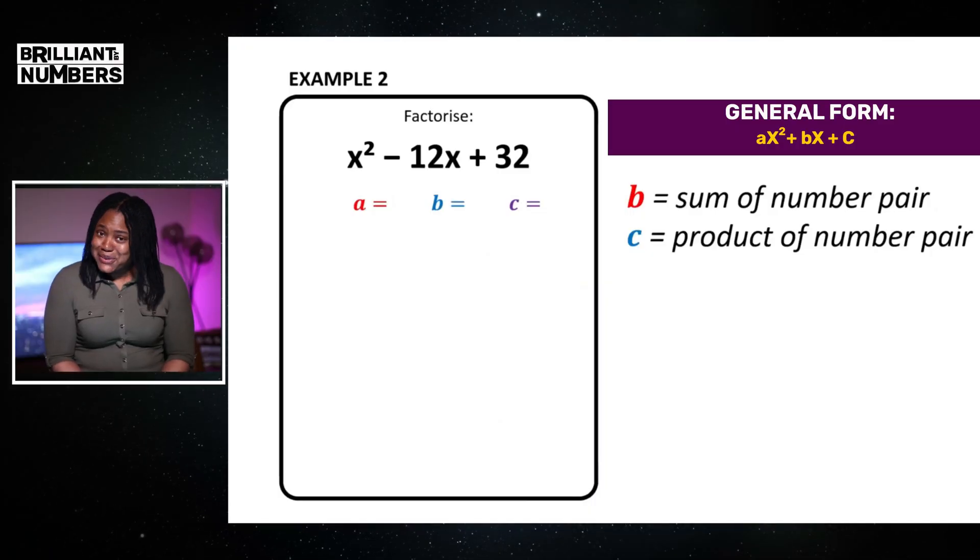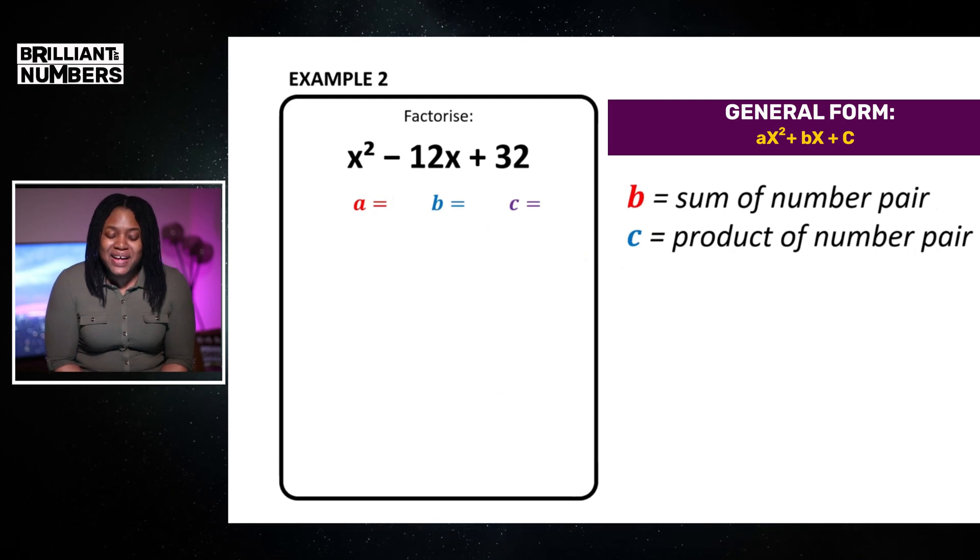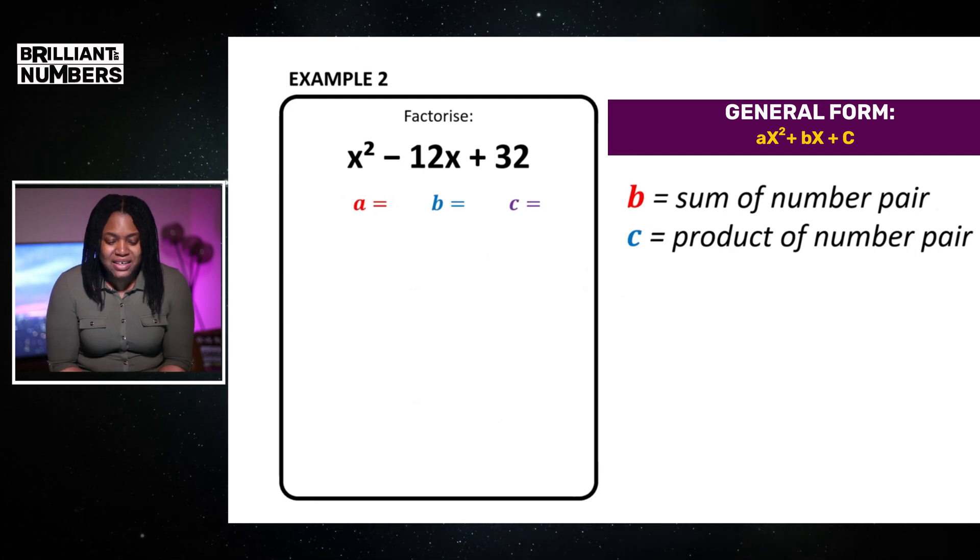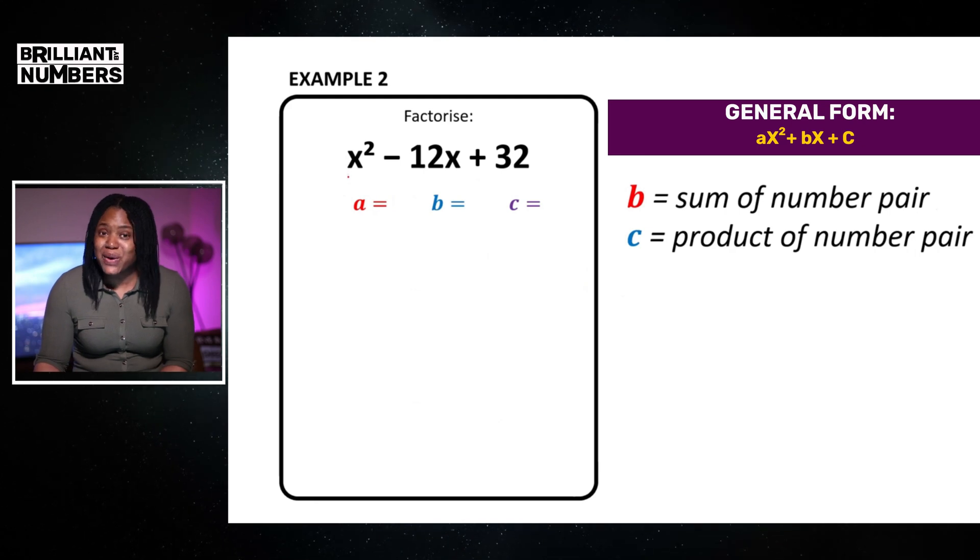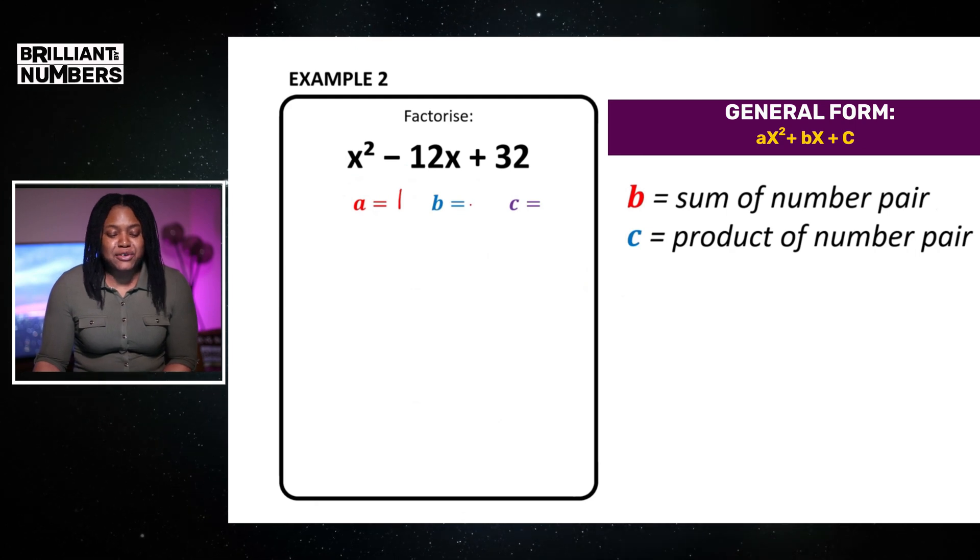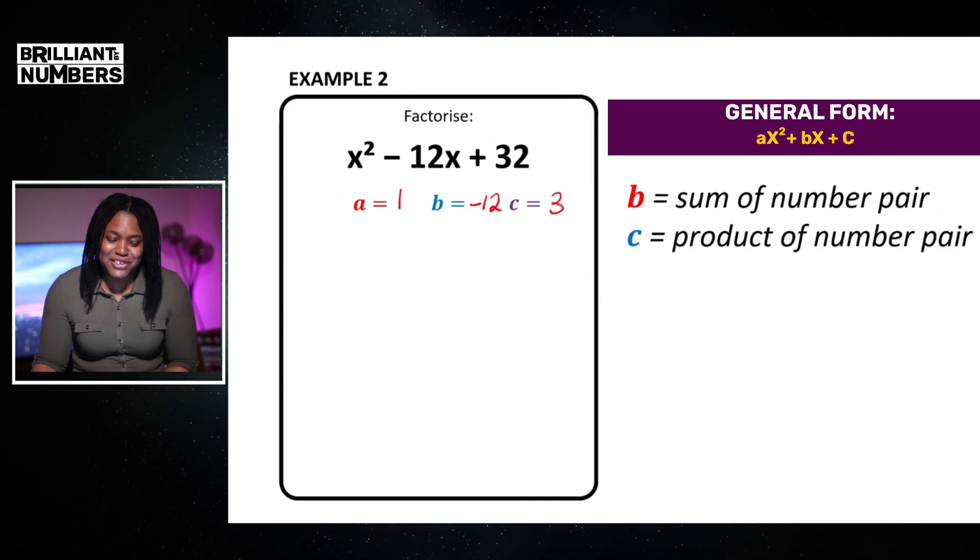So, now, we are going to get into our second example. So, in this example, slightly larger numbers. Absolutely fantastic here. So, we are asked to factorize x squared, minus 12x, add 32. So, again, we are going to write down what is a. Coefficient of x squared is positive 1. The coefficient of x is minus 12 for our b term and our constant term is positive 32.